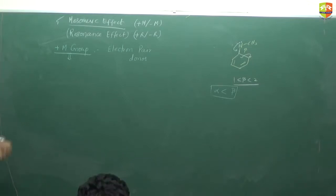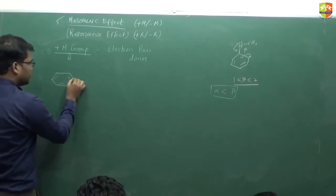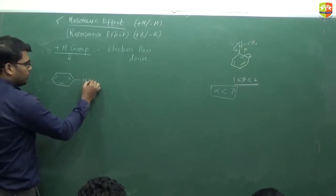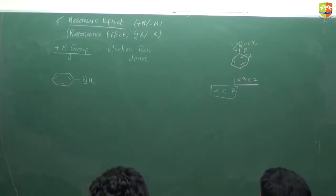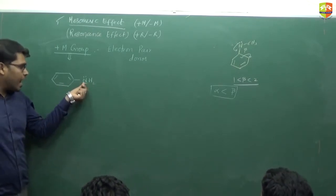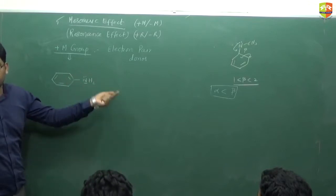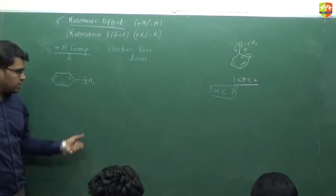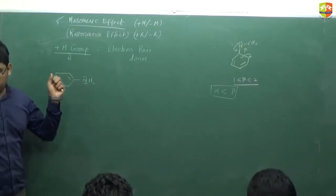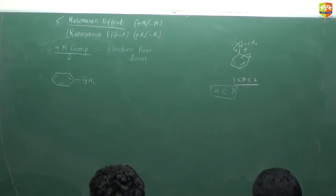The first atom means the atom of the group that is directly attached to the benzene ring. For example, if NH2 is attached to benzene, nitrogen is the first atom and it has one lone pair. So if the atom attached to the benzene ring has at least one lone pair, it shows plus M effect. This is very important — the first atom must have at least one lone pair to behave as an electron pair donor.